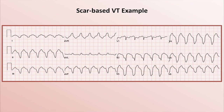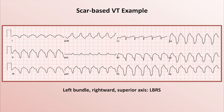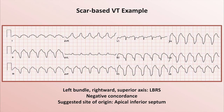The second example is a little trickier. There is a left bundle pattern in lead V1. Lead I is down-going, so a rightward-directed axis. The inferior leads have negative complexes, so a superior axis. This is LBRS VT, with negative concordance in the precordial leads. When thinking about the site of origin, the left bundle suggests the RV or potentially the septum. However, the rightward axis in lead I seems to suggest a lateral focus — which initially seems to contradict the left bundle — until you remember that a rightward axis can also be seen in apical VT of the septum or even the RV. The superior axis strongly suggests an inferior location. So the suggested site of origin is the apical inferior septum, though a VT originating from the RV apex could also potentially have a similar appearance.